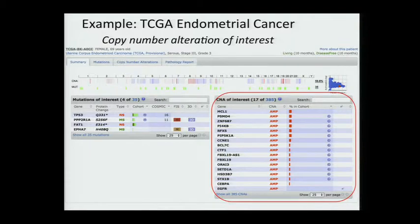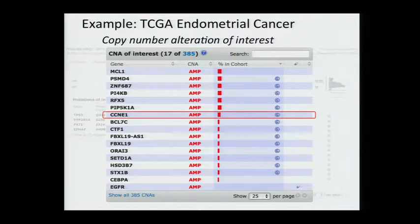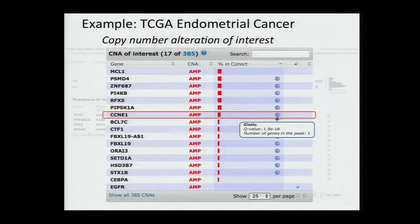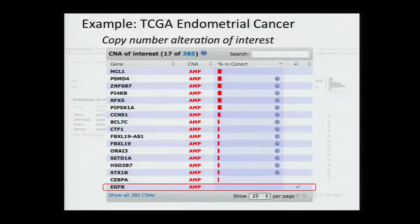Mutation Assessor predicts this mutation to have a high functional impact. From the 3D structure through Mutation Assessor, it is clearly a mutation in a highly conserved region. In the copy number events panel, there are 385 copy number altered genes total, and 17 of them are reported as interesting. For example, CCND1 is reported because it is a recurrent gene based on GISTIC and is a focal amplification. EGFR is reported because it is an annotated cancer gene — it's a rare event, not recurrent and not in GISTIC peaks, but EGFR is a well-known drug target.